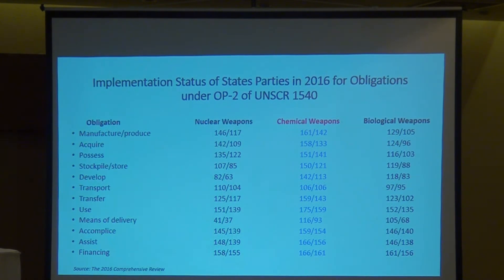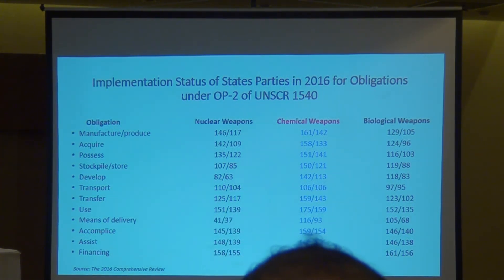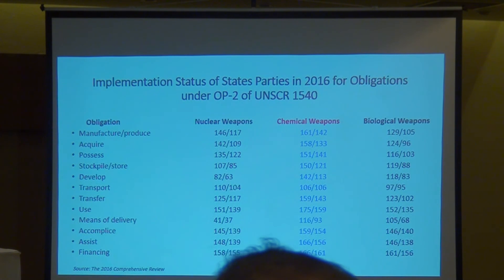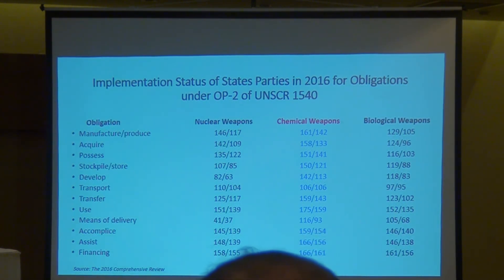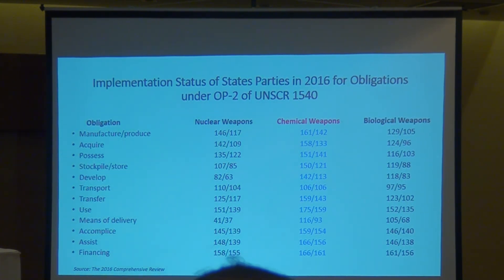This is a very interesting slide pulled from the comprehensive review done by 1540 in 2016. This review includes a comparison of the number of member states that have taken measures to meet the obligation under paragraph 2 of Resolution 1540. The number of all measures related to chemical weapons is higher than those for nuclear or biological weapons. The metrics data indicate an absolute increase of 15 percent in measures recorded covering obligations under paragraph 2 in relation to chemical weapons, with such prohibitions representing a 74 percent implementation rate overall.